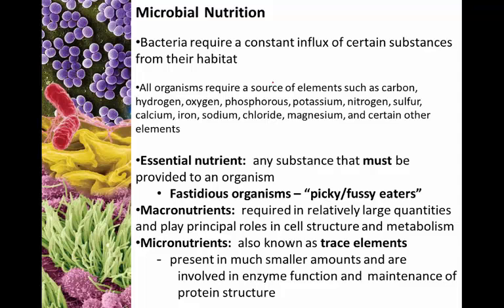We divide nutrients into macronutrients and micronutrients. Macronutrients are required in large amounts and encompass macromolecules that play major roles in cell metabolism or structure. Micronutrients, also known as trace elements, are needed in much smaller amounts. Most are involved in enzyme functionality — things like cofactors or maintenance of protein structure, such as iron in a hemoglobin molecule. In larger amounts, these can actually be dangerous to the organism.